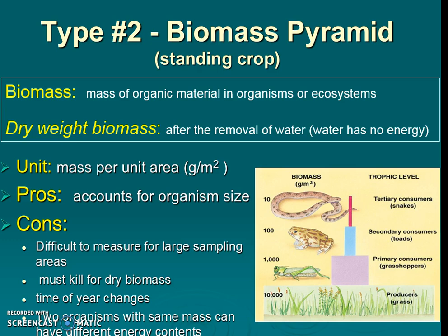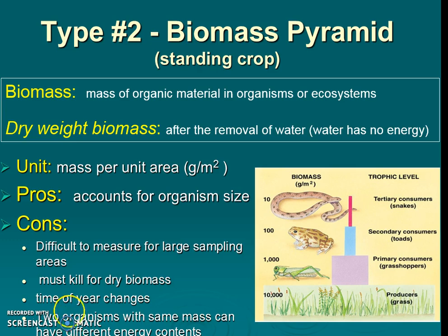A con for pyramid of biomass is that it's difficult to measure for a large sampling area, because you have to capture the organism, and since it's dry weight, you have to kill and dry it — which is not usually considered ethical. It might also differ depending on time of year, since plants grow bigger after spring rains. Also, organisms of the same mass might have different amounts of energy — for example, a blubberry whale holds much more energy than other organisms due to higher fat content.